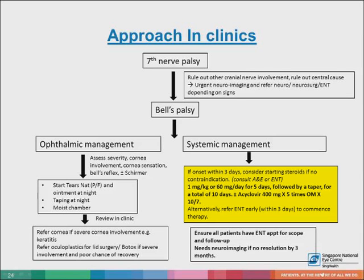You can discuss with your physician colleagues. Please ensure all patients have an ENT appointment for a scope and a follow-up. Patients usually need neuroimaging if there is no resolution by three months. The ophthalmic management is targeted mainly to protect the cornea. In the ECS, you can manage a patient with mild keratopathy. However, patients may need further referral to an oculoplastic or corneal service if there is severe involvement or poor chance of recovery.